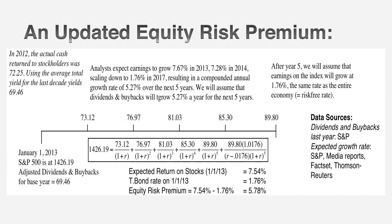I'm pretty much set on computing an equivalent to the yield to maturity. I have the price for stocks — what you paid, $1,426.19. I have the expected cash flows. I solve for that discount rate that will make the present value of my cash flows equal to the level of the index today. It's a little messy, but I can get there, and when I do, I have an expected return on stocks.